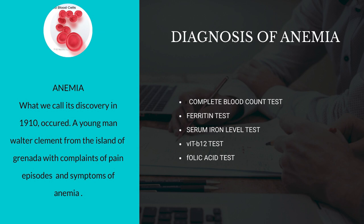Diagnosis of anemia. There are a number of ways by which we can diagnose anemia. Number 1, complete blood count test (CBC). Number 2, ferritin test. Number 3, iron serum level test. Number 4, vitamin B12 test. Number 5, folic acid test.